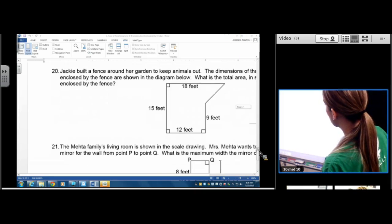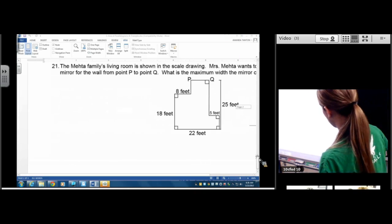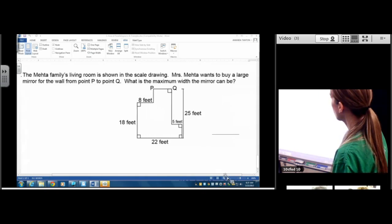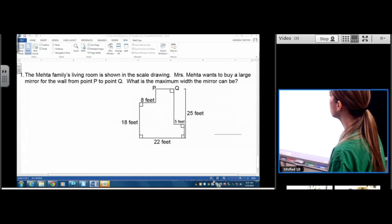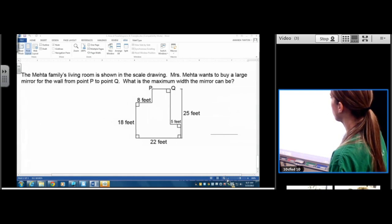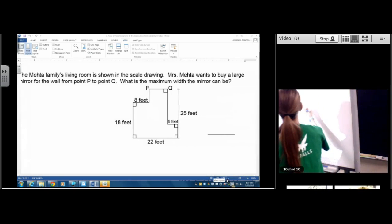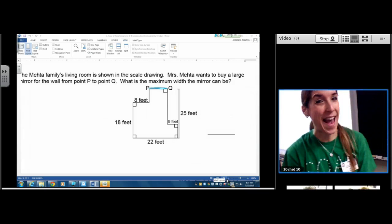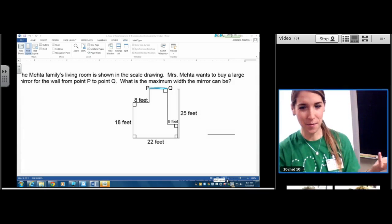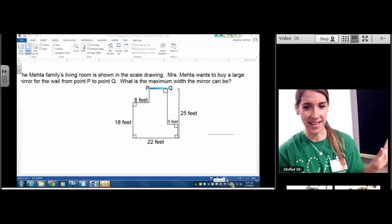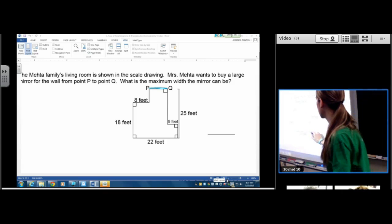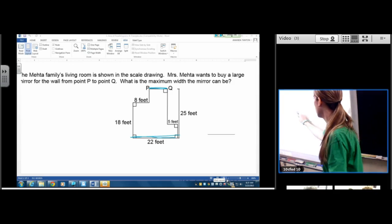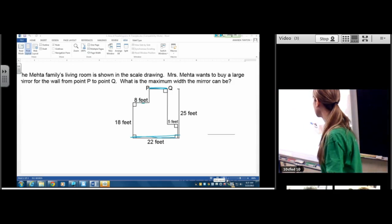Now let's look at 21. She wants to buy a large mirror for the wall from point P to Q. What's the maximum width the mirror can be? This is a really fancy way of asking, what is the length of P to Q? Really fancy way of asking. So literally, you just do the 22 minus the 8 minus the 5.